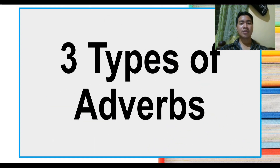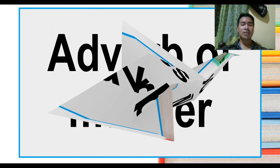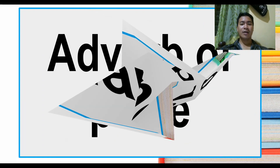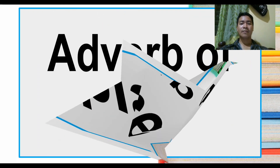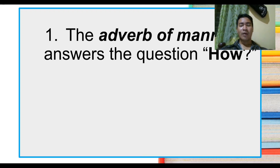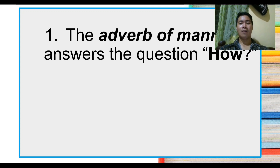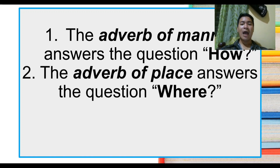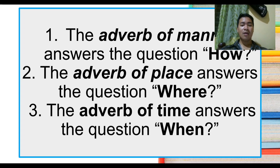We have three types of adverbs: adverb of manner, adverb of place, and adverb of time. Number one, the adverb of manner answers the question how. The adverb of place answers the question where. And number three, the adverb of time answers the question when.